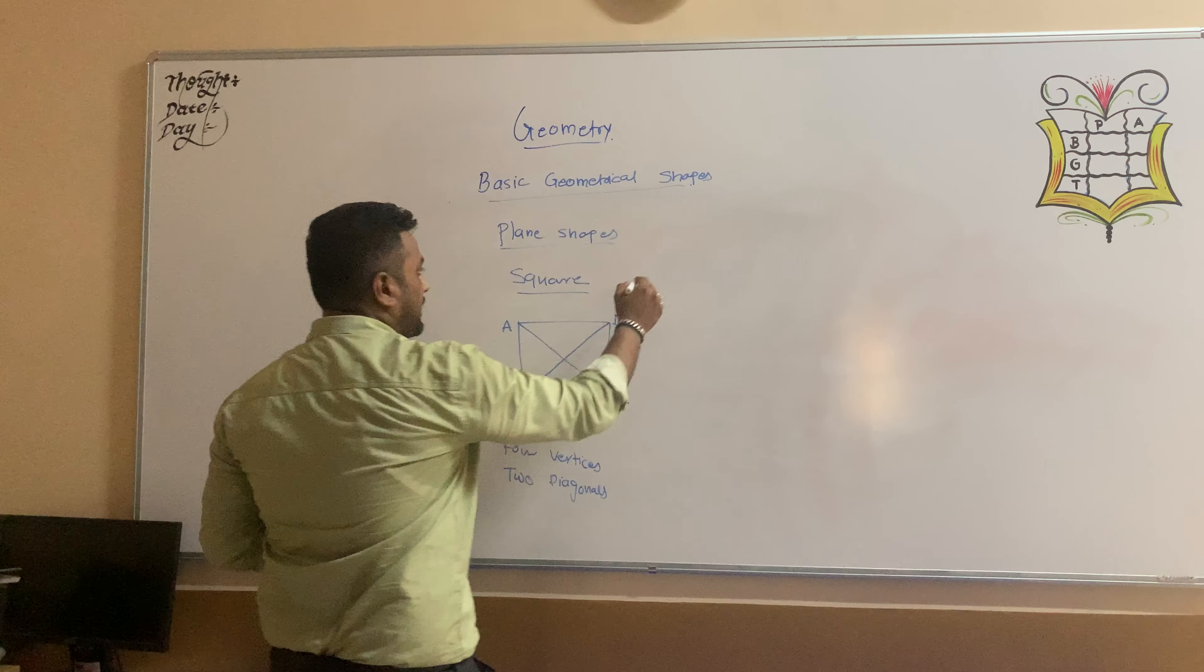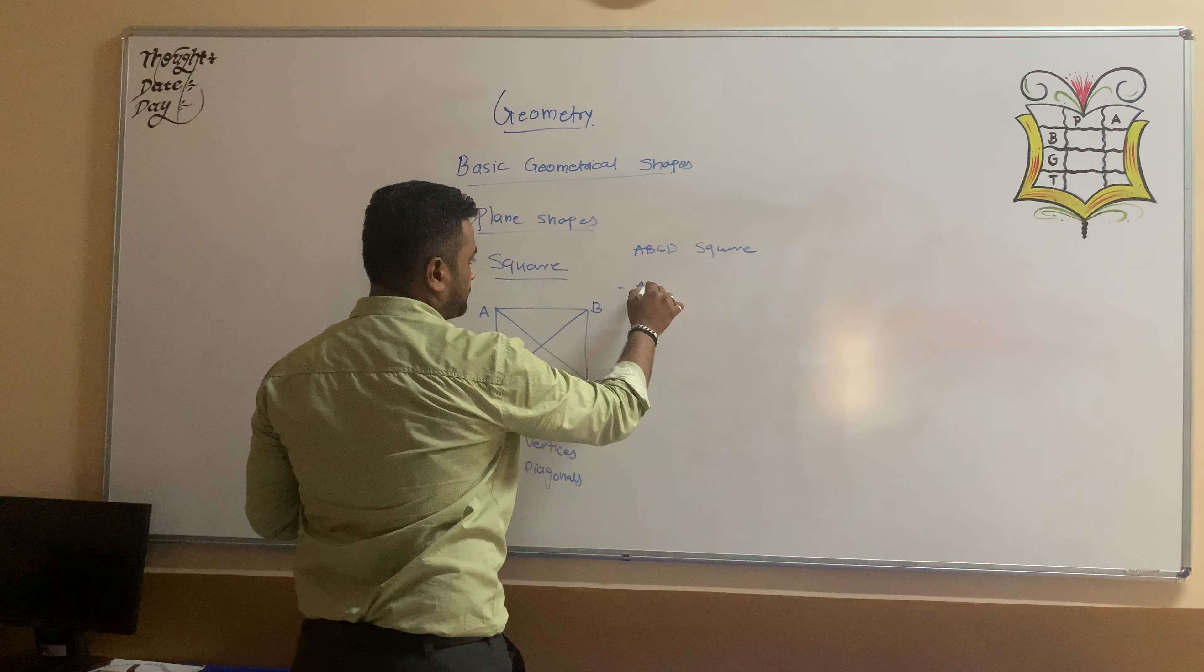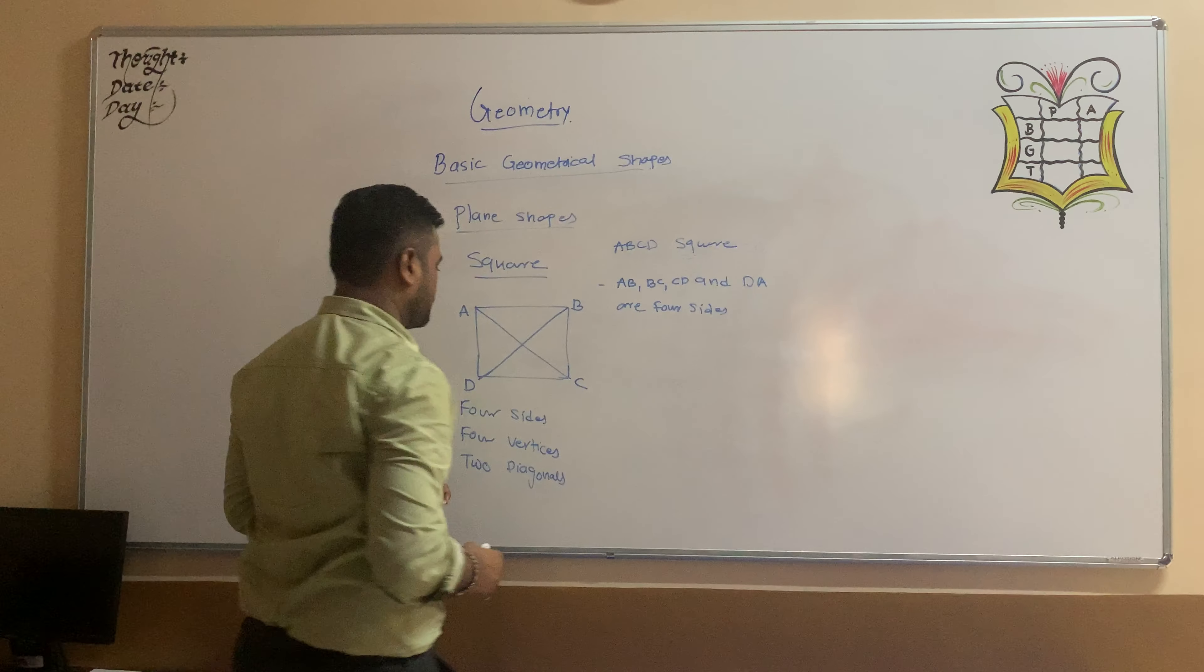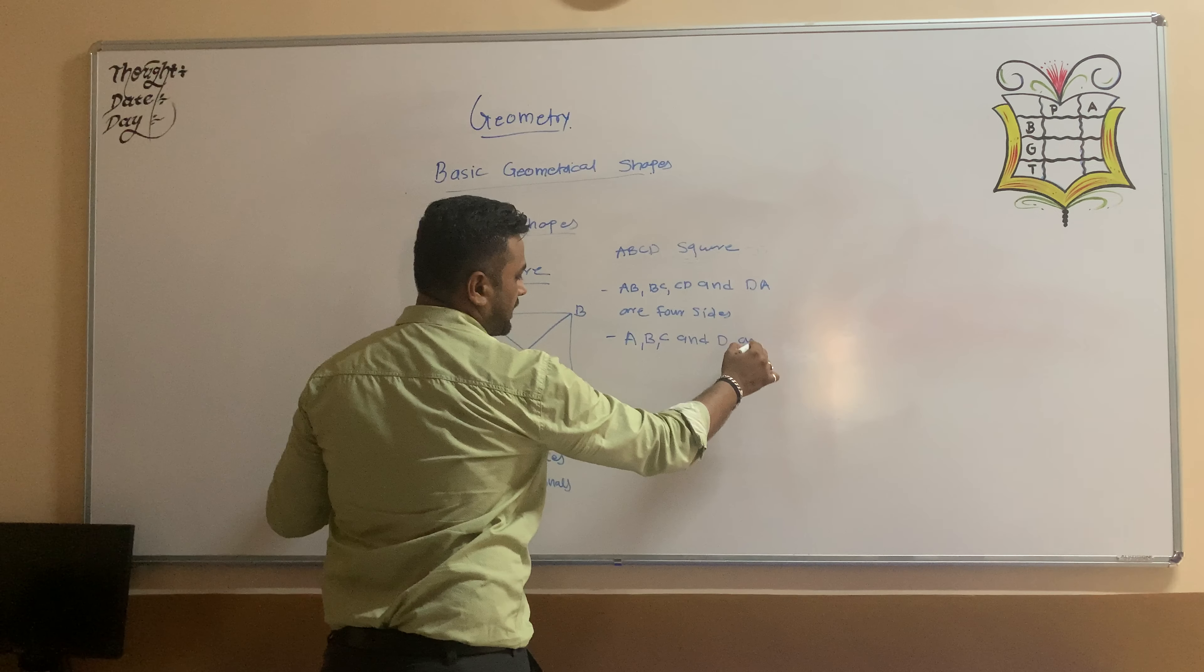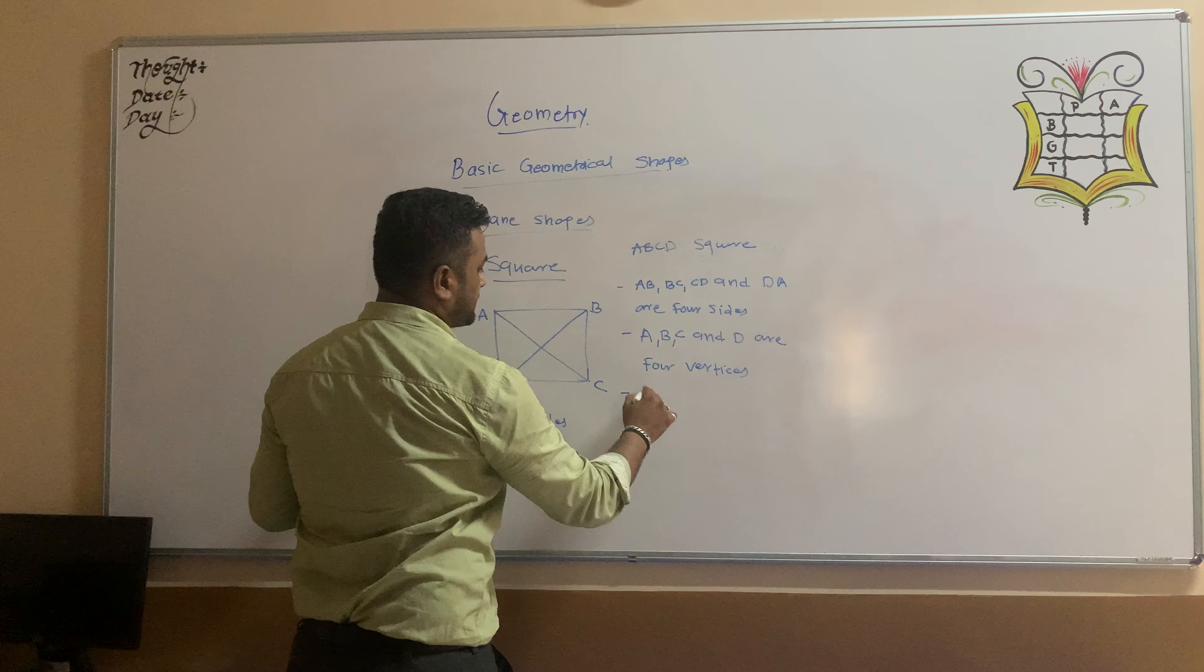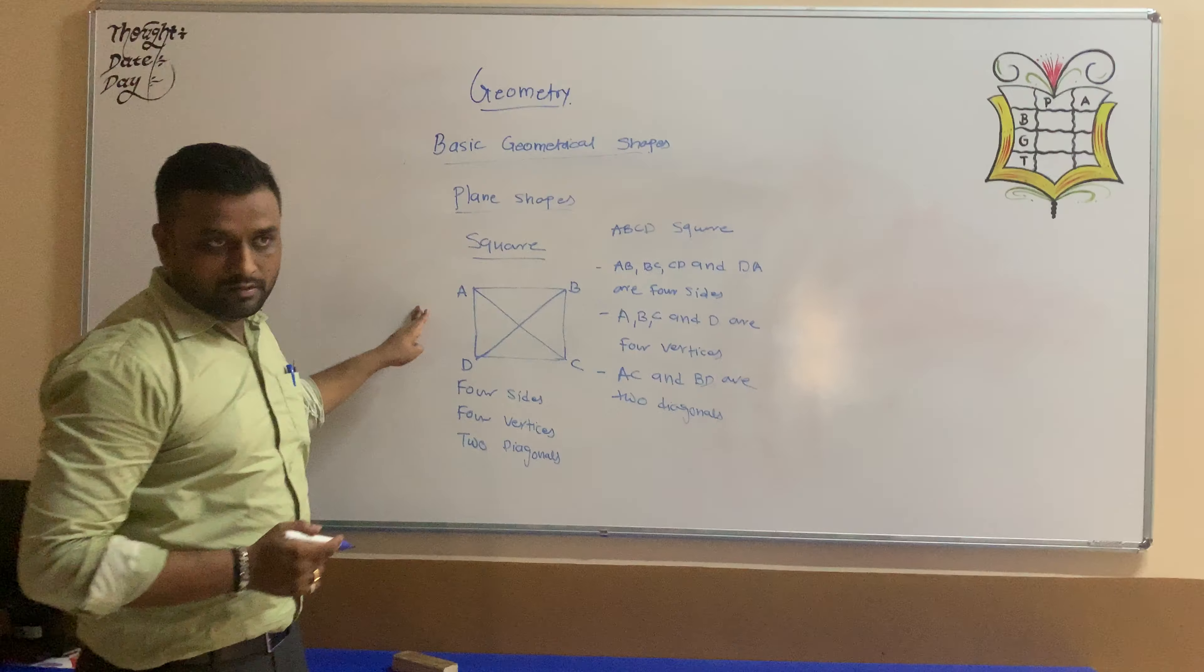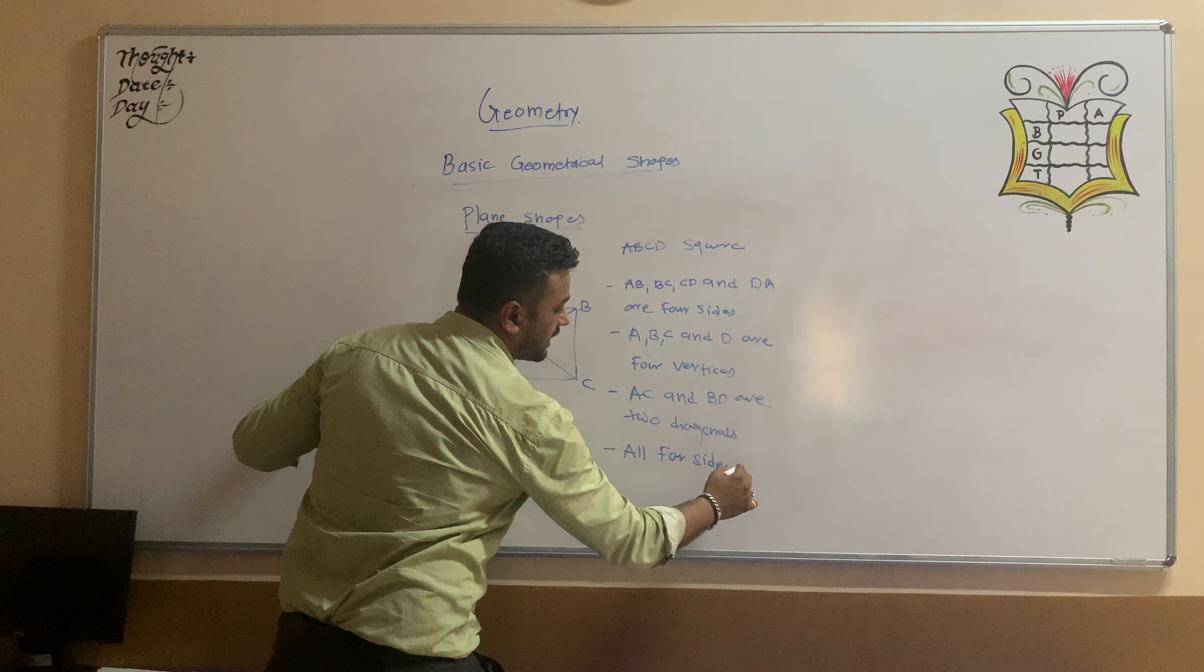Now, in square ABCD, AB, BC, CD and DA are four sides. A, B, C and D are four vertices. And AC and BD are two diagonals. And in square, all four sides are same.